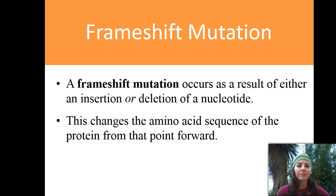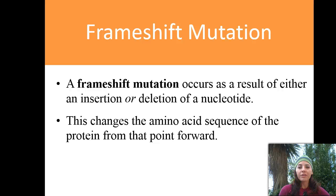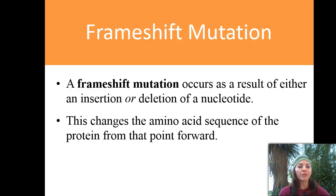The next type of mutation is a frameshift mutation, which shifts the entire sequence. It occurs as a result of either an insertion — a nucleotide added into the sequence — or a deletion — a nucleotide removed from the sequence. This changes the amino acid sequence of the protein from that point forward.